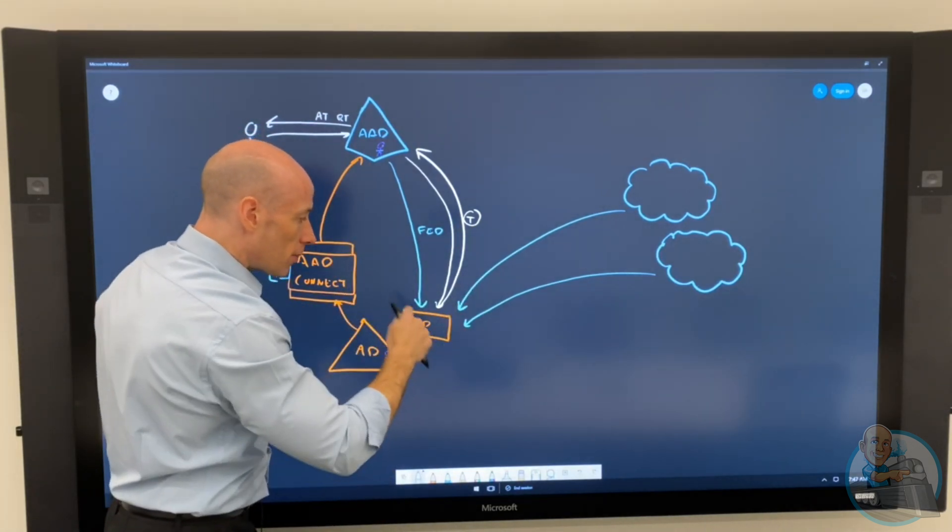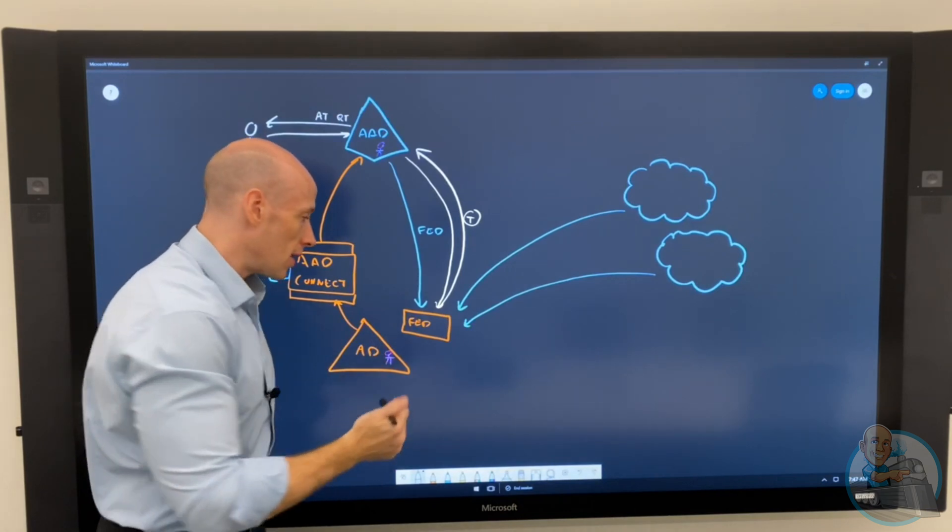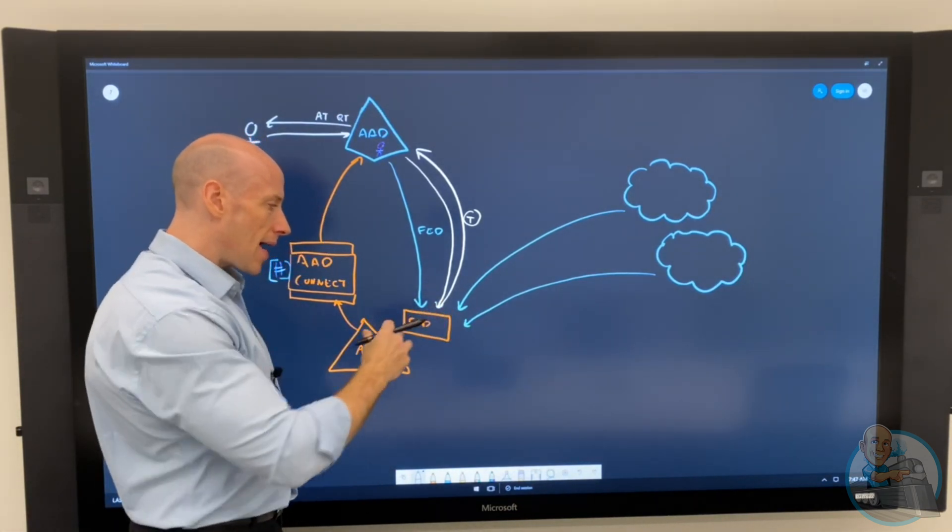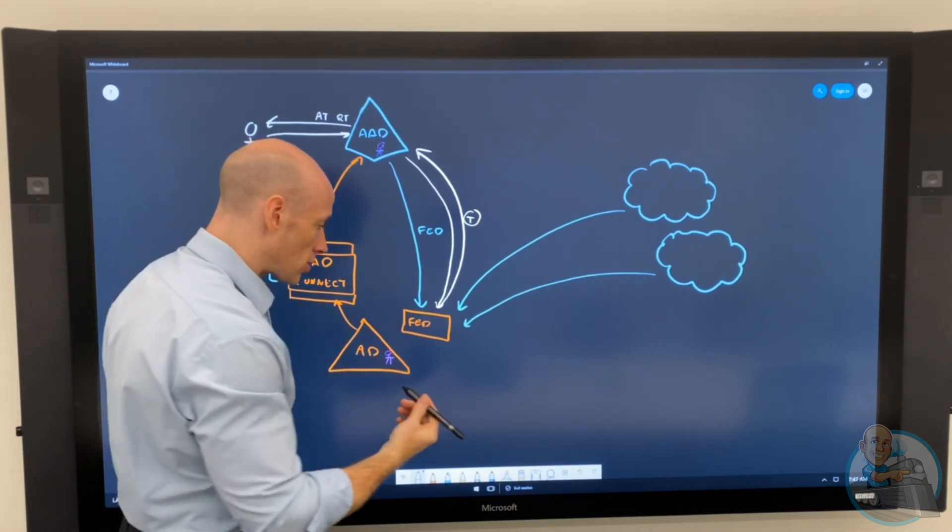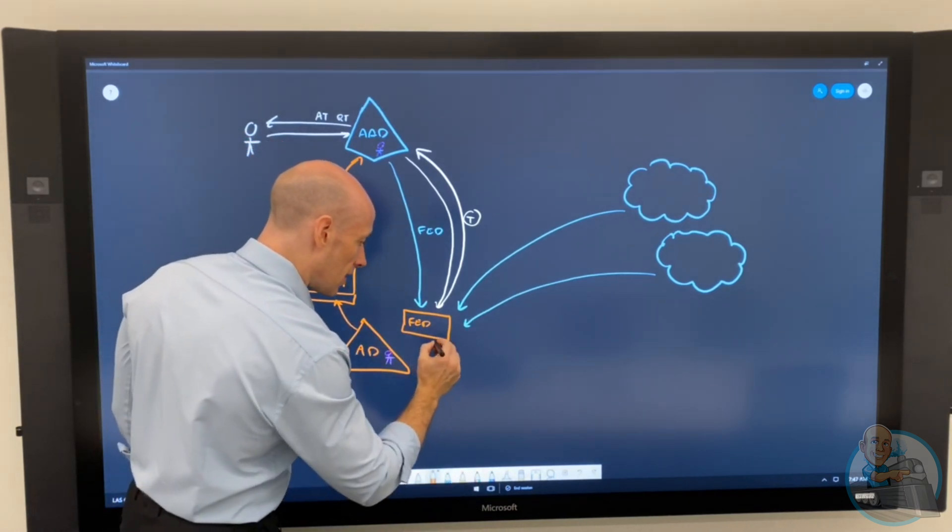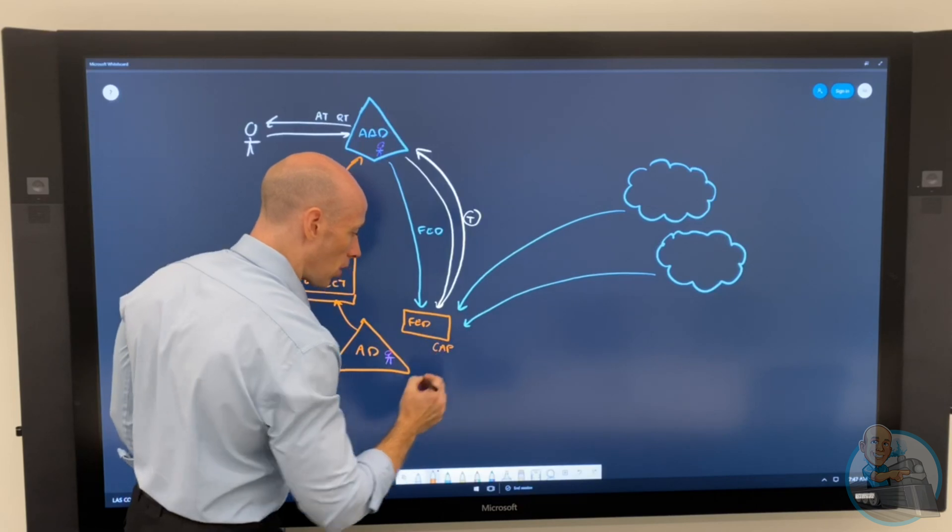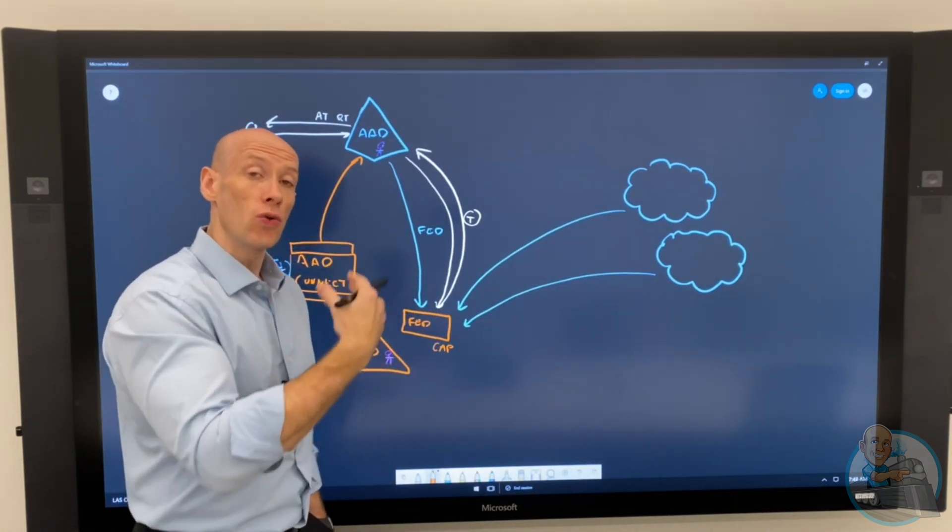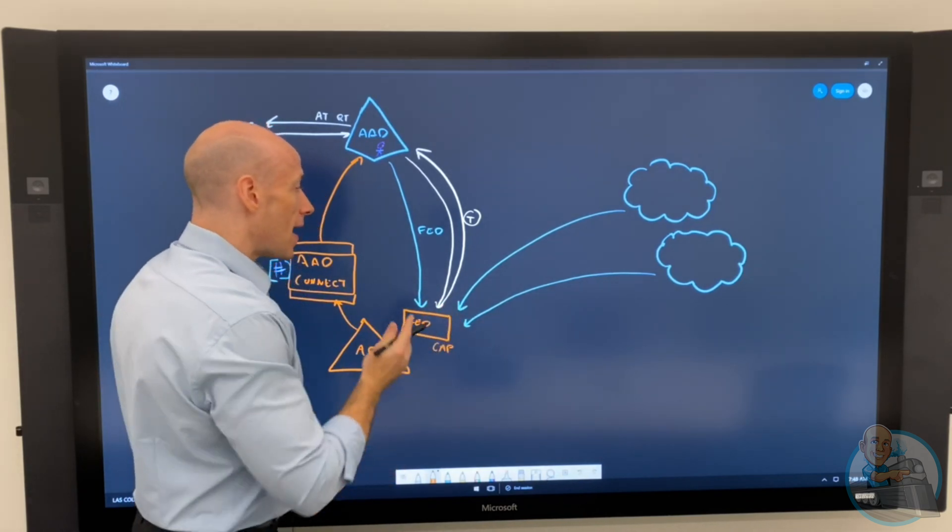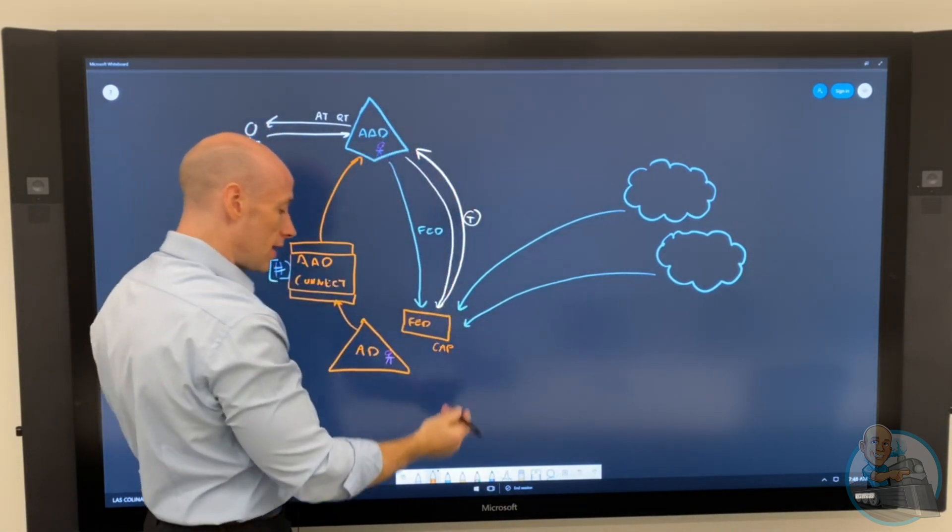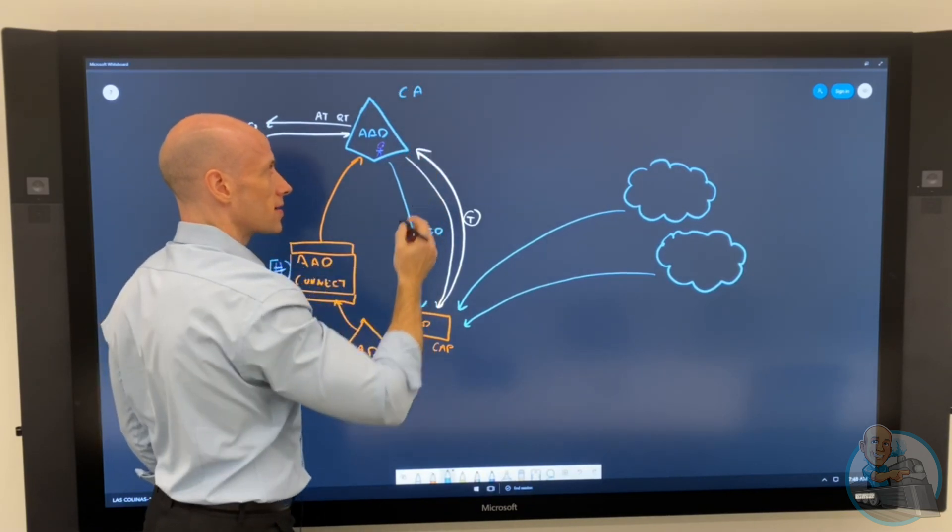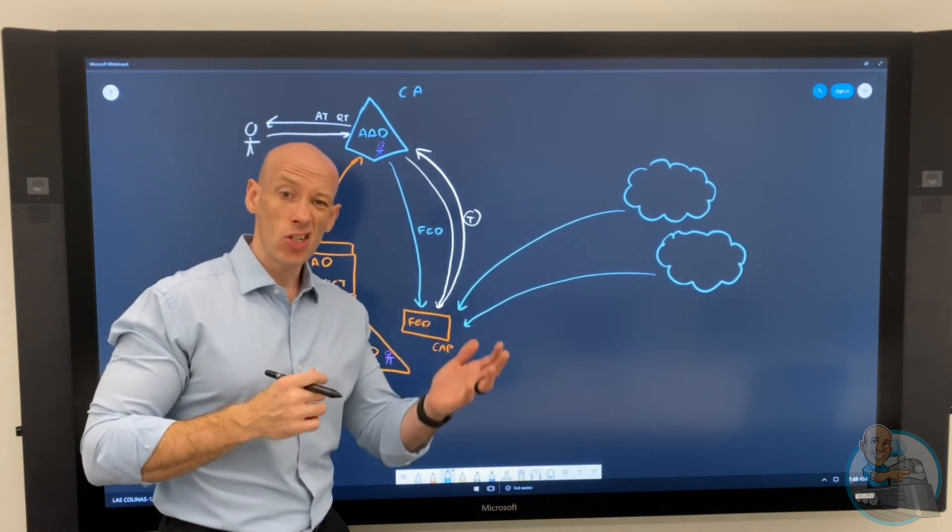So think about the flow. The flow here, as part of the authentication, that federation service was used. So if I had access policies, for example, if this was ADFS, I can have client access policies, they can check various things. They would get called for that initial authentication. And then once I've got that token, AAD would be used for things like conditional access.